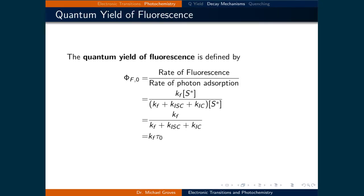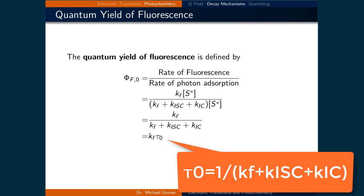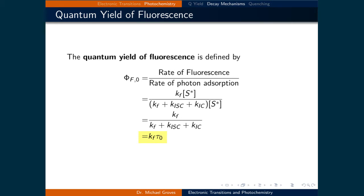Let's now quantify how many light-emitting events a system produces relative to all light-related events, so that we can quantify how efficient a system is for a particular purpose. Using the definition of quantum yield and the result of the rate law discussion, we can define the quantum yield of fluorescence as the rate of fluorescence divided by the rate of photon absorption. Substituting in the rate law terms, the quantum yield of fluorescence equals Kf·[S*] divided by (Kf + Kisc + Kic)·[S*]. The [S*] terms cancel, and substituting in the observed fluorescence lifetime gives: Φf = Kf · τ₀.